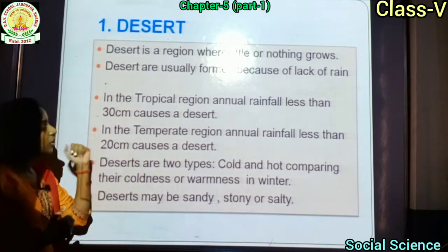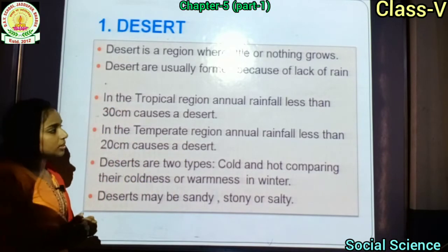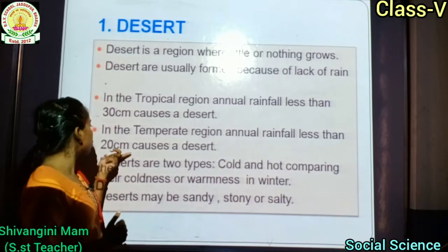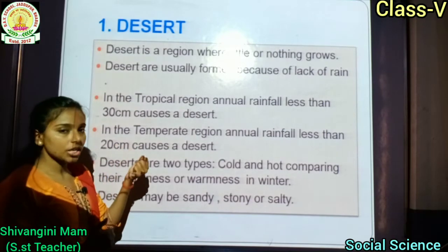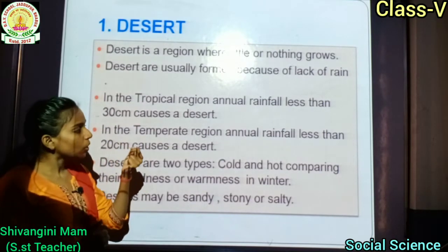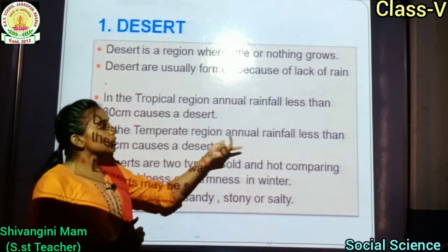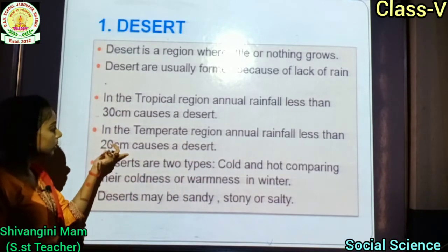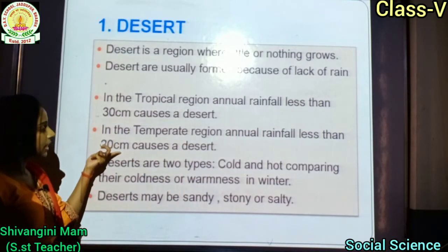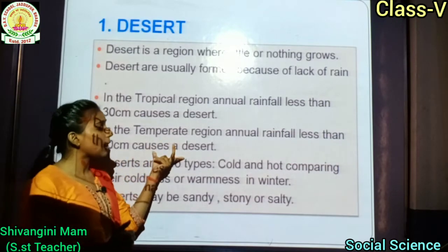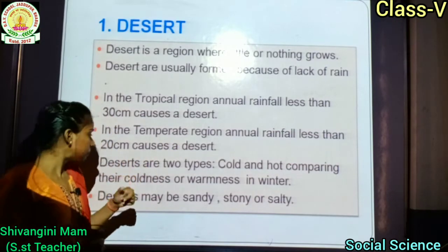In the temperate region, annual rainfall less than 20 cm causes a desert. Temperate region में जो annual rainfall होता है वो 20 cm से कम होता है, जिसके कारण वहाँ desert form होता है.